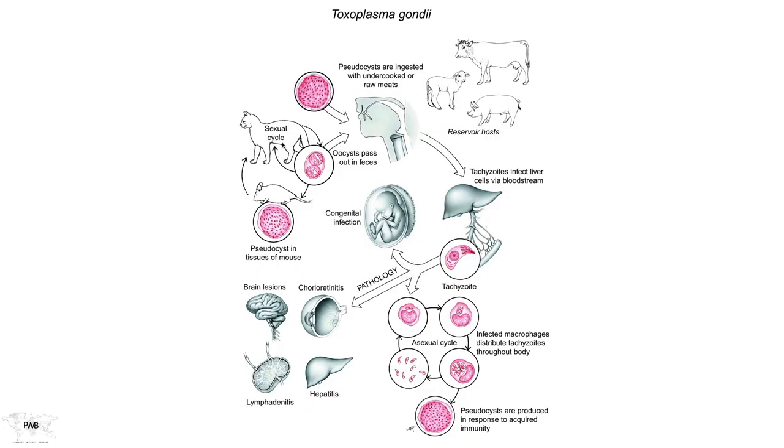Moving to the cat: assume the cat has never been exposed to toxoplasmosis before. It acquires the infection from an infected rodent that harbors the pseudocyst in its tissues. Cats are non-picky when it comes to selecting portions of mouse — consuming usually the entire carcass. Domestic cats sometimes are reluctant to capture mice, but in general cats will attack, kill, and eat rodents. By eating the tissues, they acquire the infection.